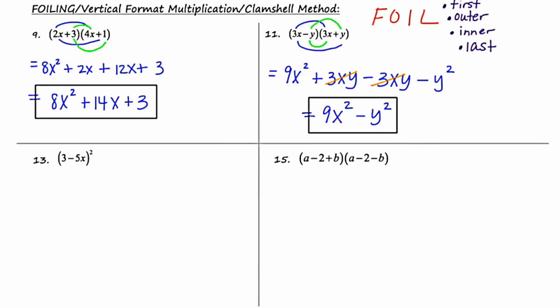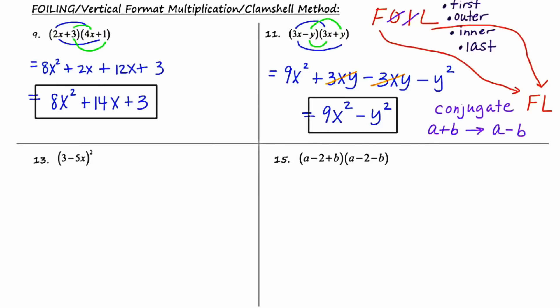Here's the interesting thing: we're multiplying the binomial 3x minus y with another binomial 3x plus y. These binomials are identical except the middle sign has been changed. This sets up a situation called multiplying a binomial by its conjugate. In general, the conjugate of a plus b is a minus b — the same binomial with the middle sign changed. When you multiply something by its conjugate, the outer and inner terms of FOIL will always cancel out, leaving just the F and the L — I call this 'Florida,' the abbreviation for the state.